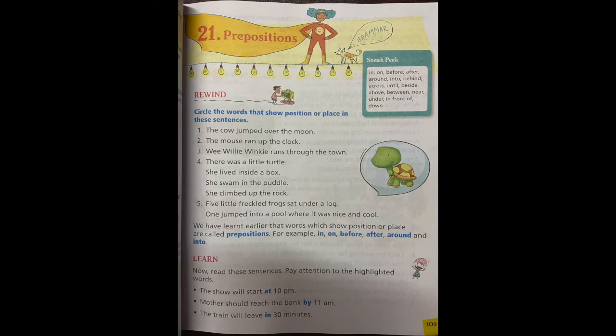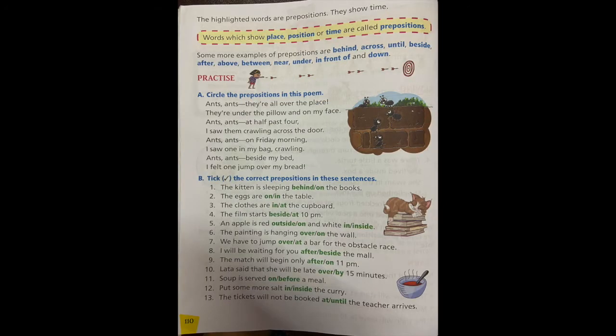She swam in the puddle. In. She climbed up the rock. Up. Five little freckled frogs sat under a log. Where did they sit? Under is the position place. One jumped into a pool where it was nice and cool. Where about the pool? Into. Yes, circle into. So these words over, up, through, inside, in, up, all these words show us the position or the place about a noun, so these are called prepositions.